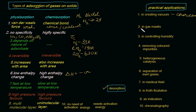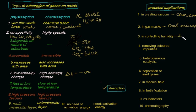Charcoal finds use in gas masks. Workers who work in coal mines use gas masks to protect themselves, since deep under the mines there may be poisonous gases present. The poisonous gases will be adsorbed by the mixture of adsorbents present in gas masks. Substances like silica gel are used for controlling humidity because they have the capacity to absorb moisture from the air.